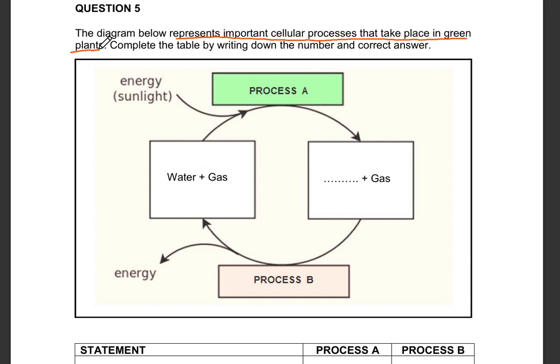Before we even look at the table and complete the table, you should be able to basically analyze everything that is happening here. You're having process A and you're having process B. With process A, they are showing you that in order for process A to take place, we actually need energy, which is radiant energy, sunlight. And we also need water plus a specific gas. They are not mentioning the gas,